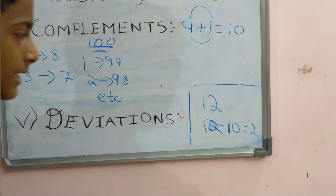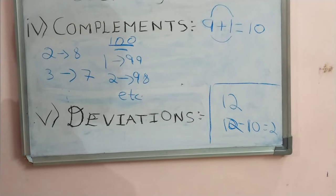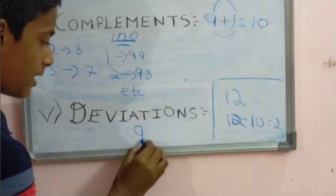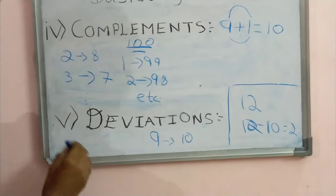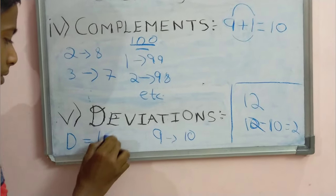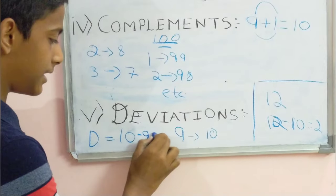Similarly, let's take another example, say 9. Here, the nearest base number is 10. So, deviation equals 10 minus 9, that is equals to 1.